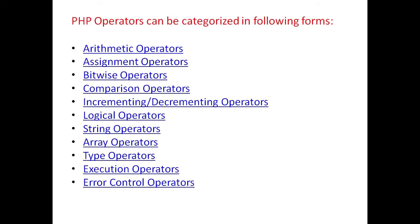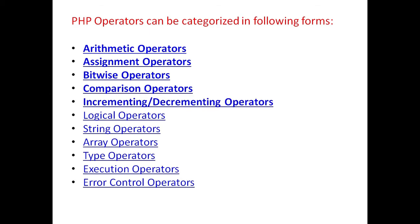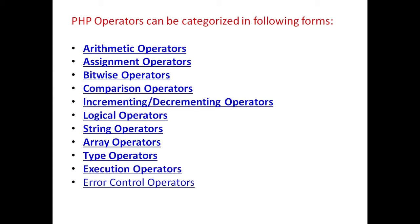PHP operators can be categorized in the following forms: Arithmetic operators, Assignment operators, Bitwise operators, Comparison operators, Incrementing and decrementing operators, Logical operators, String operators, Array operators, Type operators, Execution operators, and Error control operators.